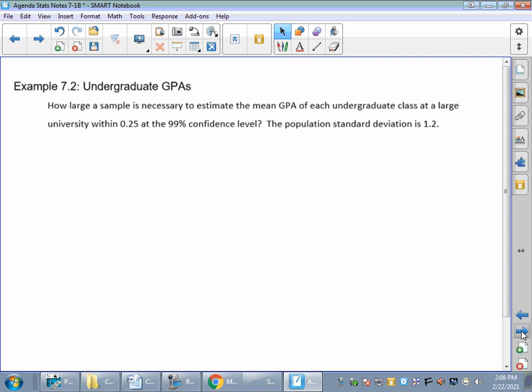So that formula is the big idea from section 7.1b. So let's do a couple problems. And let's see that you make sure that you know what we're looking at. So this example, how large a sample is necessary? So we know we're finding n. We want to estimate the mean GPA of each undergraduate class at a large university within 0.25 at the 99% confidence level. Population standard deviation is 1.2.